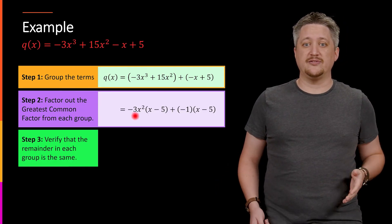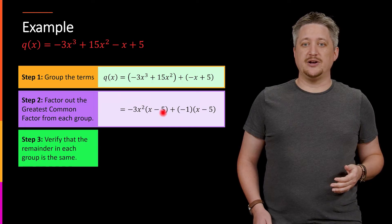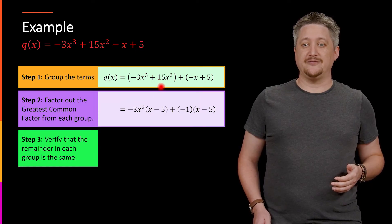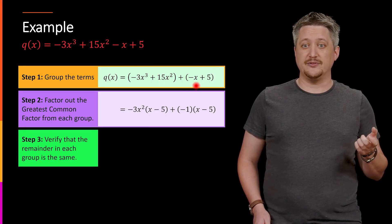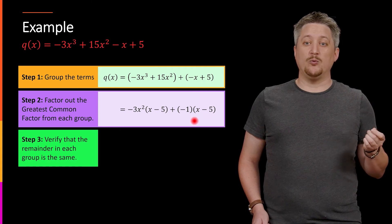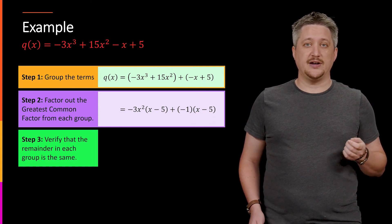And that gets me here. So I pull out the negative 3x². That leaves the x left over and it flips the sign. So I get a plus five left over. And here I'm pulling out a negative 1, which just flips both sides. So I get x minus five.